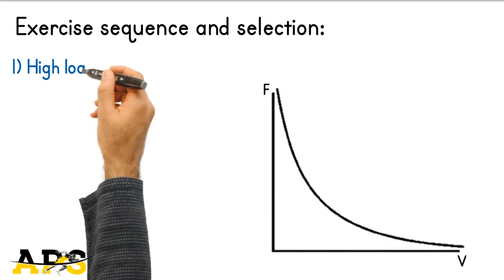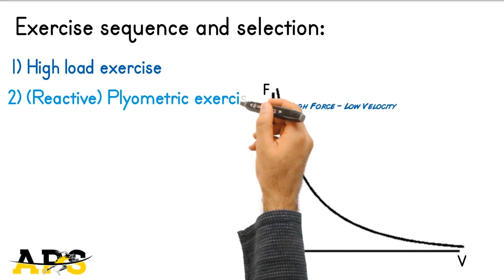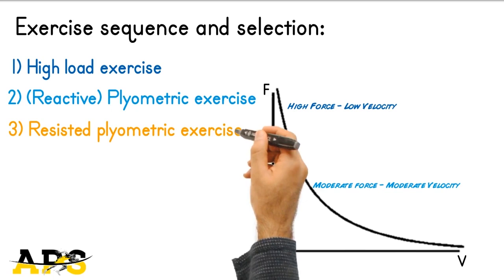The first pair of exercise always begins with a high-load exercise followed by an exercise moderate in force and velocity which typically involves a reactive plyometric.